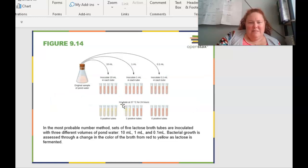And then this is the most probable number method. And this is the sets of five broth tubes are inoculated with three different volumes of pond water. And then the bacterial growth is assessed through the change in color of the broth from red to yellow as lactose is fermented. And we will be doing this in one of the labs because it's very cool that you get to be able to see it and the fermentation, the difference in pHs, from using phenylalanine.